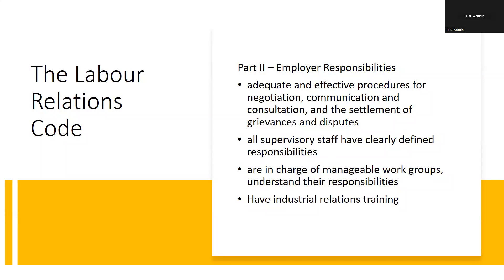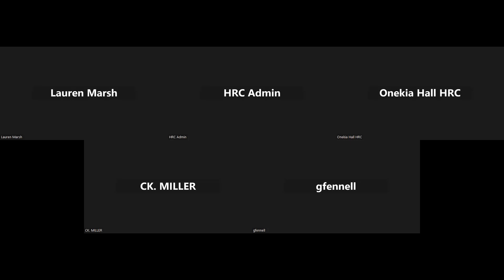At a disciplinary hearing, one of the first questions to ask the accused employee is whether they have access to the disciplinary policy. If the answer is no, the hearing should be paused. If HR cannot produce evidence — a signed acknowledgment from orientation, proof it's on the intranet or their device — then there will be a serious challenge to proceeding.